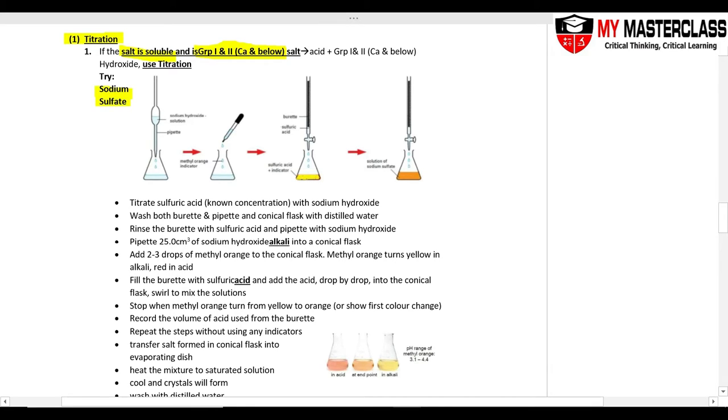Sodium sulfate, because sodium is Group 1, the method to do is titration. This is the write-up: titrate sulfuric acid with sodium hydroxide with the known concentration. Wash both pipette and burette with distilled water and then rinse it with the respective reagents. Then pipette the sodium hydroxide into the conical flask, two to three drops of indicator.